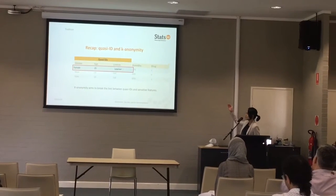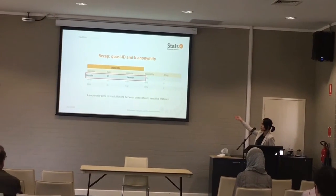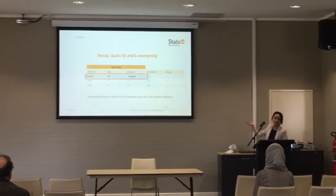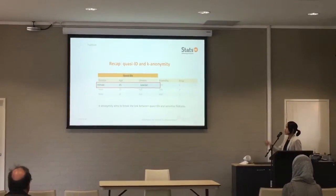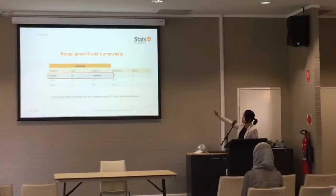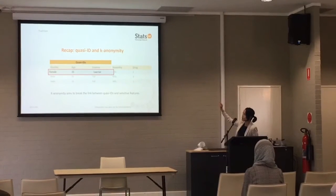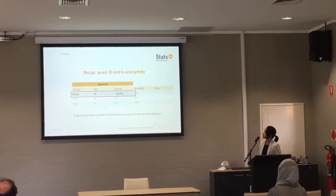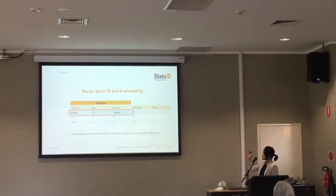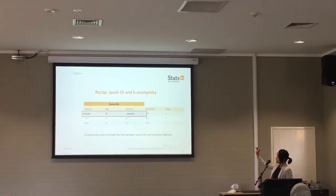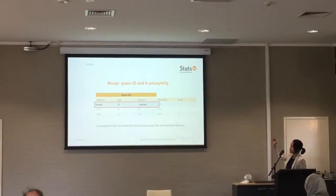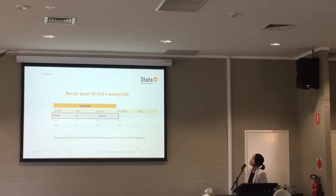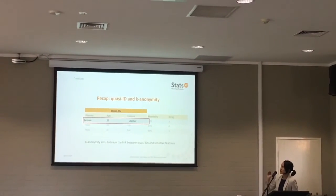Those variables include demographics such as gender, age, as well as something quite common like a license. In terms of these variables, we call them quasi-identifiers. We see that the first record is the only female 25-year-old learner driver license holder.